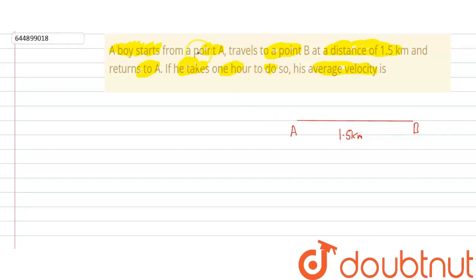What is given to us is that he goes from point A to point B and then back to point A. So we have to find his average velocity. And he takes one hour to do so. So we know that the formula of velocity is given by,